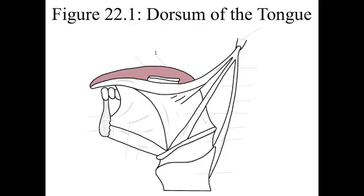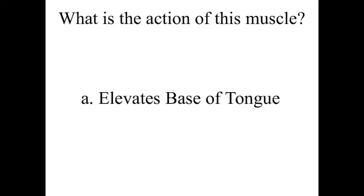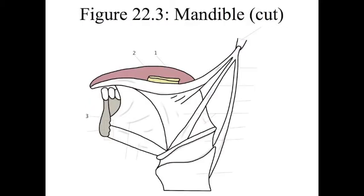Number 1 is the dorsum of the tongue. Number 2 is the palatoglossus muscle — its name helps you out: palato is palate and glossus is tongue, so it pulls and elevates the base of the tongue. Number 3 is the mandible and it is cut right here so that you can see all these muscles for the tongue.